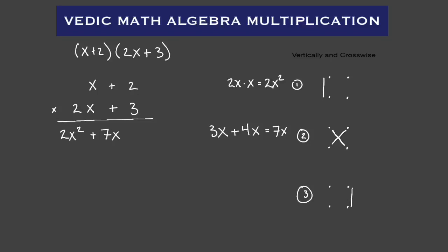Finally, our last term — we're going to multiply straight down the right-hand side. So that's two times three, which equals six. So plus six. There's our answer: two X squared plus seven X plus six.